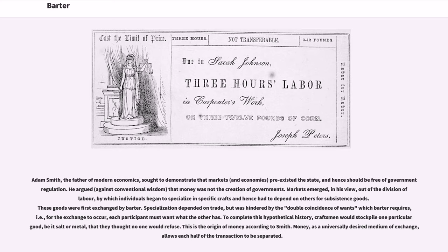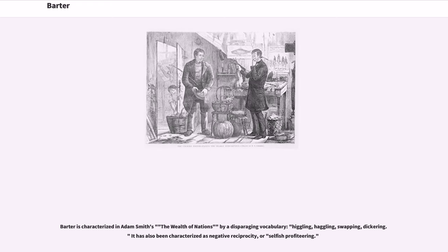Money, as a universally desired medium of exchange, allows each half of the transaction to be separated. Barter is characterized in Adam Smith's The Wealth of Nations by disparaging vocabulary: haggling, swapping, dickering. It has also been characterized as negative reciprocity, or selfish profiteering.